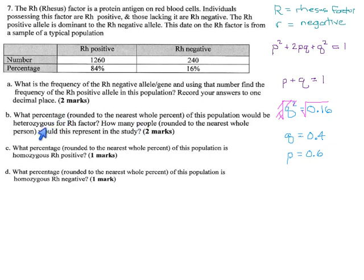What percentage of this population would be heterozygous for Rh factor? That's this group here, 2pq. 2pq would be 2 times p is 0.6 times q is 0.4. 0.6 times 0.4 is 0.24 times 2 is 0.48. So 48% of this population, almost half of it is heterozygous, meaning they would have rhesus factor because they carry the dominant allele, but they're half and half allele-wise. So to the nearest whole percent, 48% is fine.